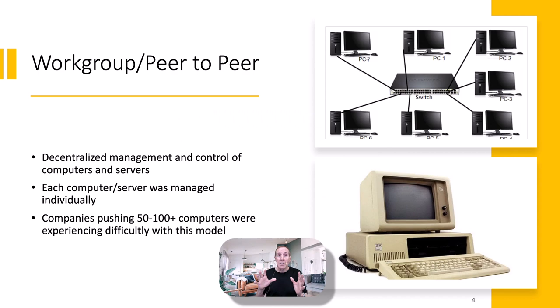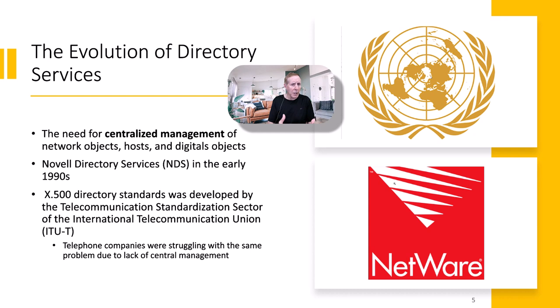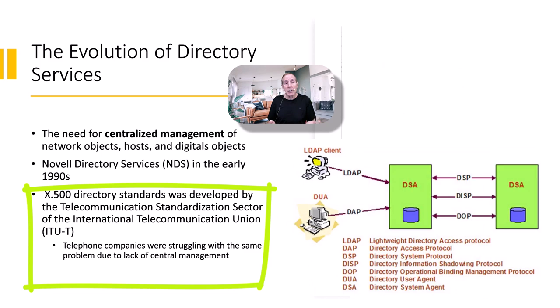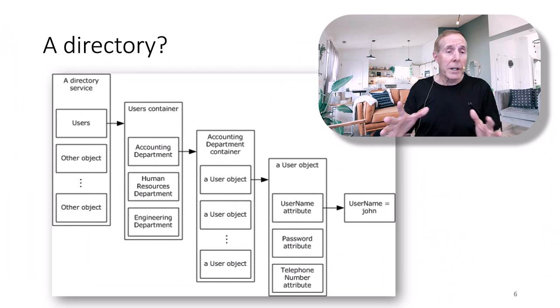Large corporations were using ThickNet instead of Coax Cable, and they were able to do a more effective job of networking large floors and multiple floors. Every computer and server was managed individually, and companies that began to push 50 to 100 plus computers were really experiencing difficulty with this model. There was definitely a need for centralized management of network objects, hosts, and digital objects. Novell brought out their Novell Directory Services, but it just never took off. Behind the scenes, the X.500 directory standards were being developed by the telephone companies.